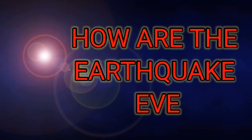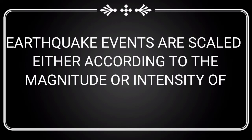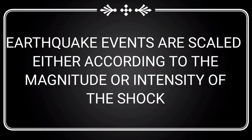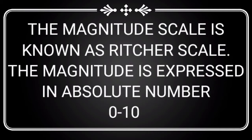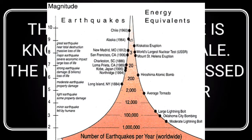Let's move to the next topic, i.e. how the earthquake events are scaled. The earthquake events are scaled either according to the magnitude or according to the intensity of the shock. The magnitude scale relates to the energy that is released during the earthquake. It is also known as the Richter scale. The magnitude is expressed in absolute numbers, i.e. 0 to 10.